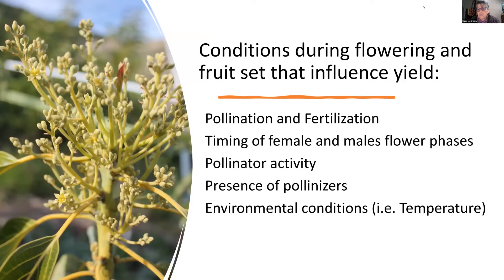There are many conditions during flowering and fruit set that influence yield: pollination and fertilization, the timing of female and male flowers, the activity of pollinators, the presence or absence of pollinizers, and environmental conditions especially temperature. For this meeting we're only going to focus on pollinators and pollination. We're planning a subsequent meeting later this year in the fall to cover other aspects of flowering and fruit set.